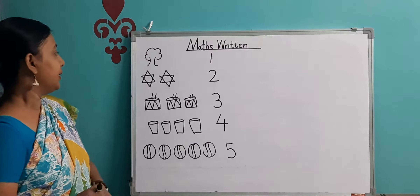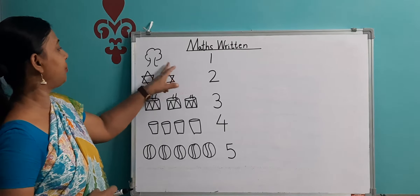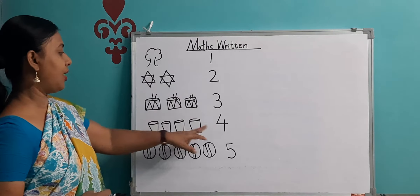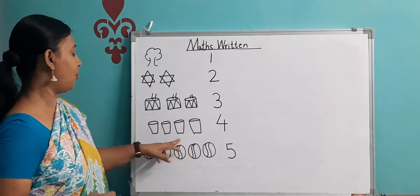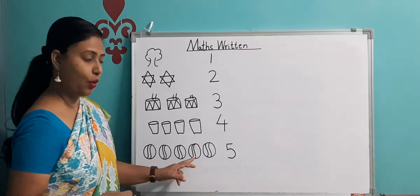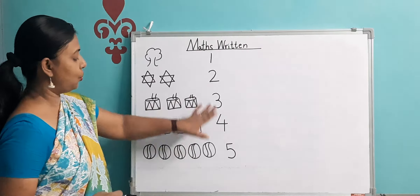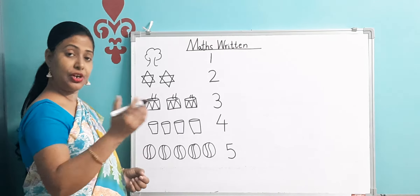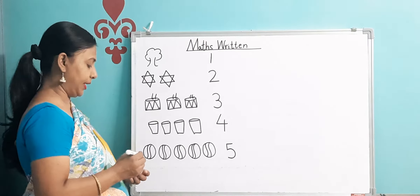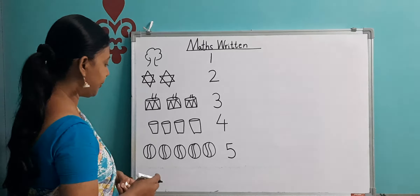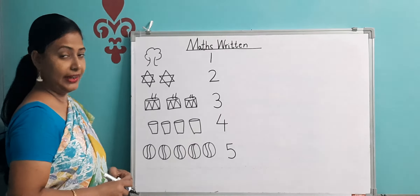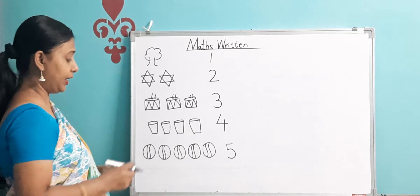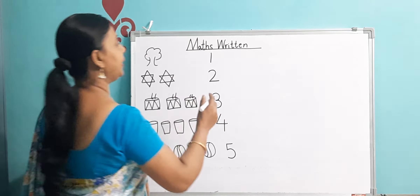So this is one tree, two stars, three drums, four glasses, and five balls. Till five, we have learnt how to write in the squares of a copy. Now, the next figure which I am going to draw, we will learn that number.